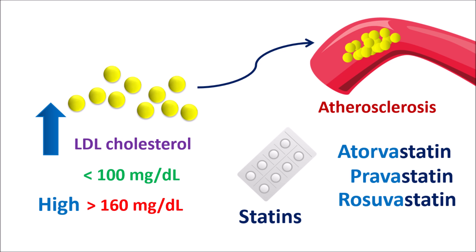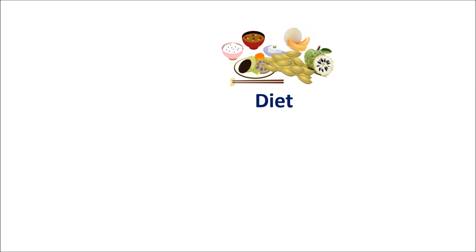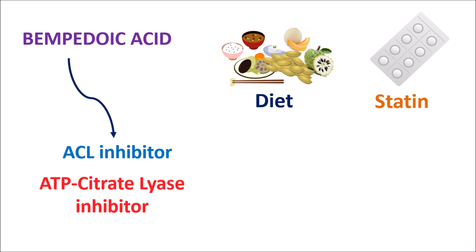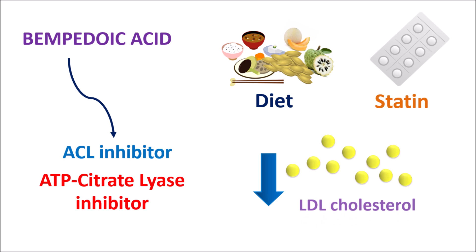At higher doses, statins can produce few serious side effects — particularly they can affect the muscles leading to myopathy. That's why in few people, along with diet control and statin therapy, we need drugs which further reduce LDL cholesterol with a low dose of statin. Bempedoic acid is one such drug which is newly approved to reduce LDL cholesterol levels. It is an ACL inhibitor — ATP citrate lyase inhibitor. This ATP citrate lyase plays an important role in the biosynthesis of cholesterol within the liver, and this step is blocked by Bempedoic acid, which can increase the efficacy of statin therapy.